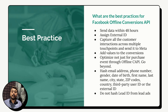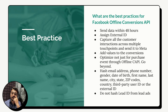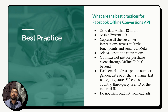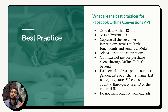Number four: when sending conversion data, also send the value of that particular conversion. This helps Meta understand who is a high-value customer versus a low-value customer, especially when you're using Maximize Conversion Value. Sending offline conversion data with value helps Meta optimize better.